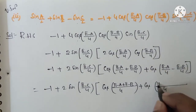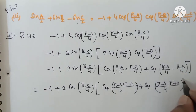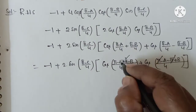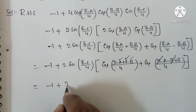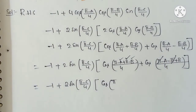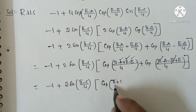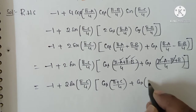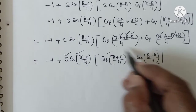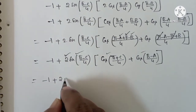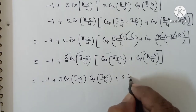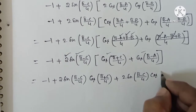Here also cancel +π and −π. Same condition applied: π − A − B = C. So: −1 + 2 sin((π−C)/4) · [cos((π+C)/4) + cos((B−A)/4)]. Distributing: −1 + 2 sin((π−C)/4) · cos((π+C)/4) + 2 sin((π−C)/4) · cos((B−A)/4). Note that π+C and π−C are correct, and B−C and B−A are identified.